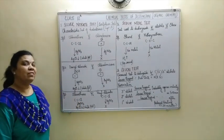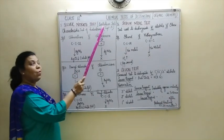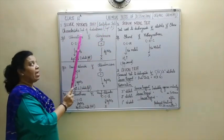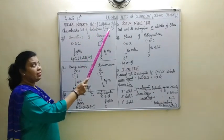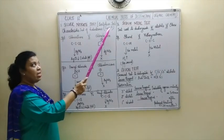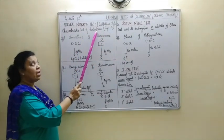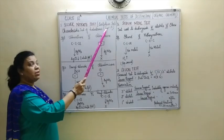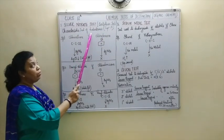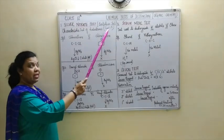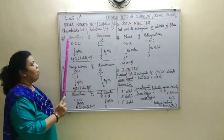Let us start with the very first chemical test of distinction. The name of the test is silver nitrate test, also called Bernstein test. It is the characteristic test of haloalkanes. In haloalkanes, the alpha carbon to which the halogen is attached is in sp3 hybridized state. So this test is given by all compounds where the alpha carbon is in sp3 hybridized state, and it is used to distinguish between pairs of organic compounds where the alpha carbon is in sp3 versus not in sp3 hybridized state.